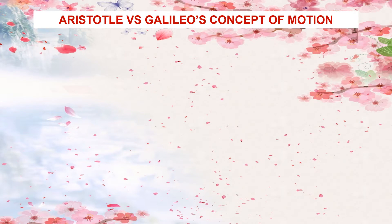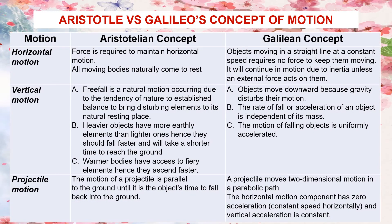Aristotle and Galileo were two of the most important historical figures that laid the foundation of motion concepts. Their views regarding motion may be opposite, but both helped the progress of science. For horizontal motion, according to the Aristotelian concept, force is required to maintain horizontal motion and all moving bodies naturally come to rest. While for Galileo, objects moving in a straight line at a constant speed require no force to keep them moving — they will continue in motion due to inertia unless an external force acts on them.